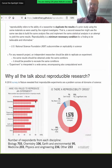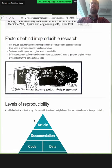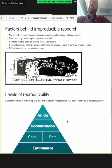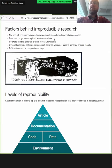Highlighting that of the order of 50 percent of scientists, or even more, have experienced problems reproducing not only experiments by other persons but also their own experiments — that's a rather severe thing. Briefly, the factors behind irreproducible research are: not enough documentation, data used to generate original results are unavailable, software used to generate original results is unavailable, it's difficult to recreate the software environment with libraries and versions, and it's difficult to rerun the computational steps. All of these are things we will go through within this lesson.